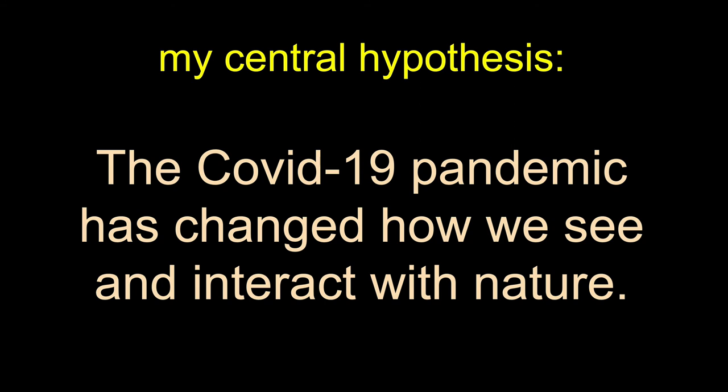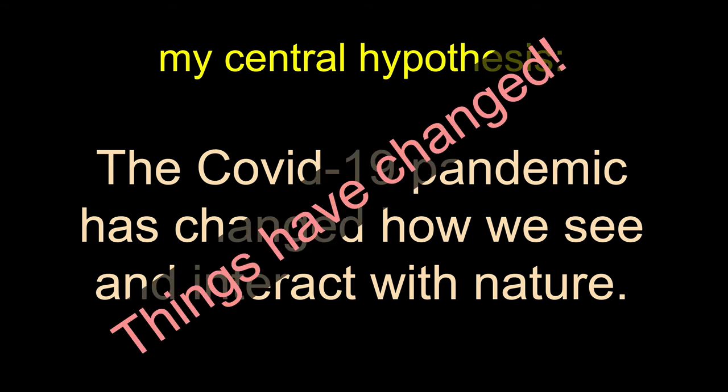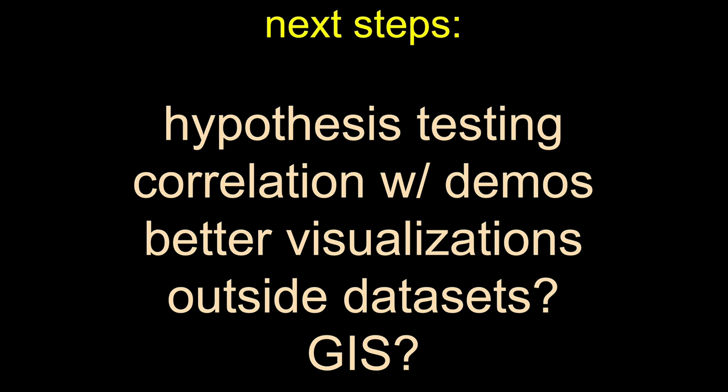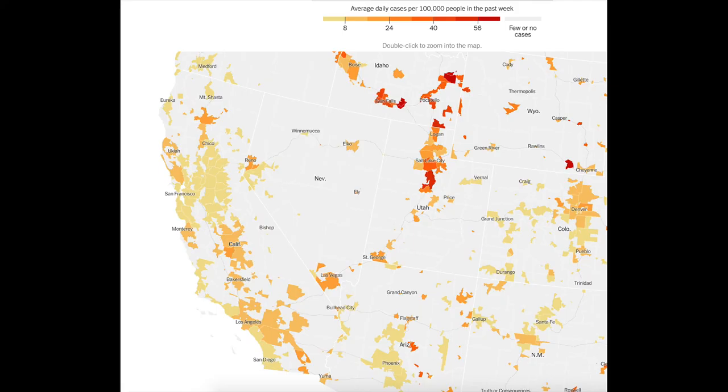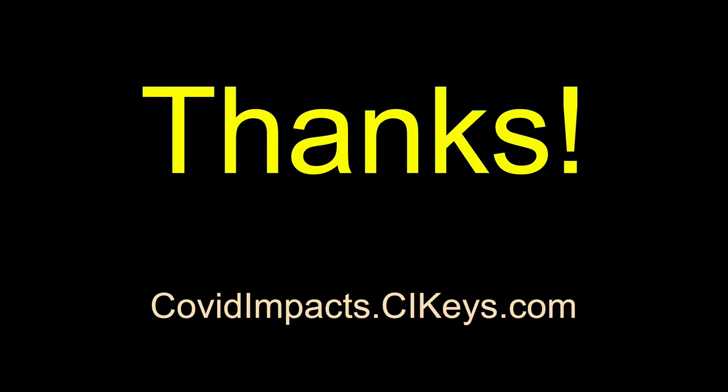I think I have found that things have changed with the pandemic. My next steps are to do more specific rigorous hypothesis testing, do some correlations with some of the demographics, work on better visualizations, and possibly get some outside data sets — maybe doing this in GIS. For example, here's some recent data I found that people are starting to publish about how people were going out and about during the pandemic. Thanks a lot for listening. You can see more on my website, covidimpacts.cikeys.com.